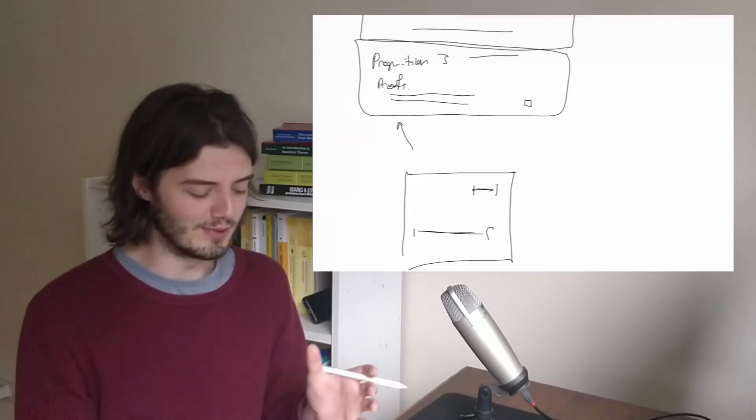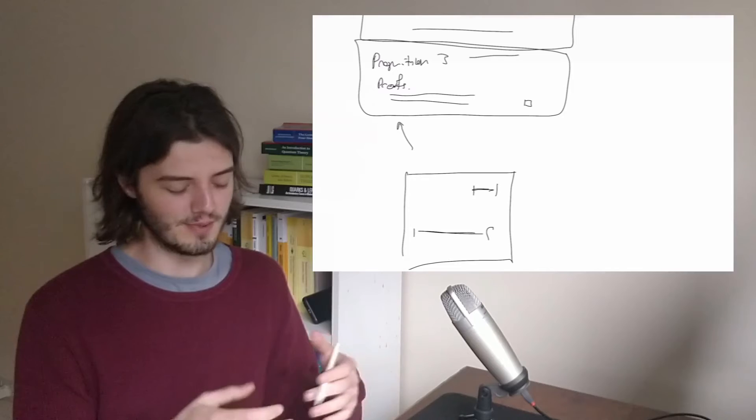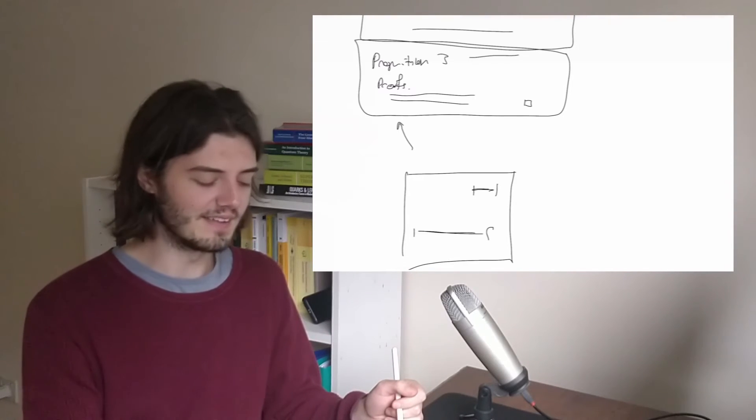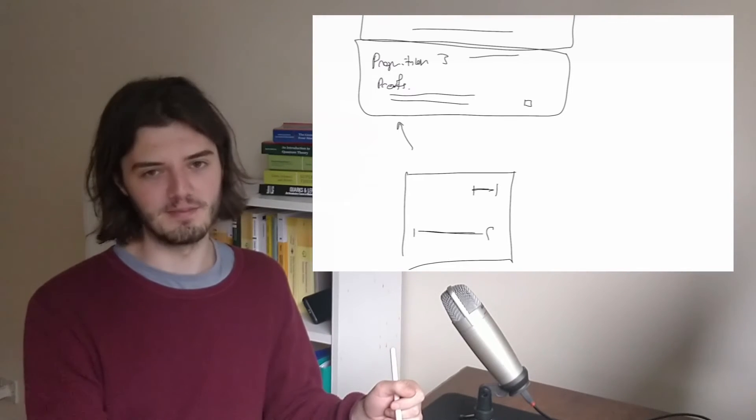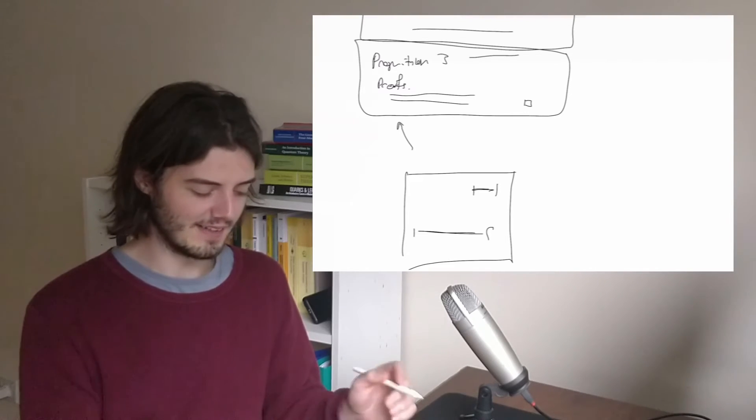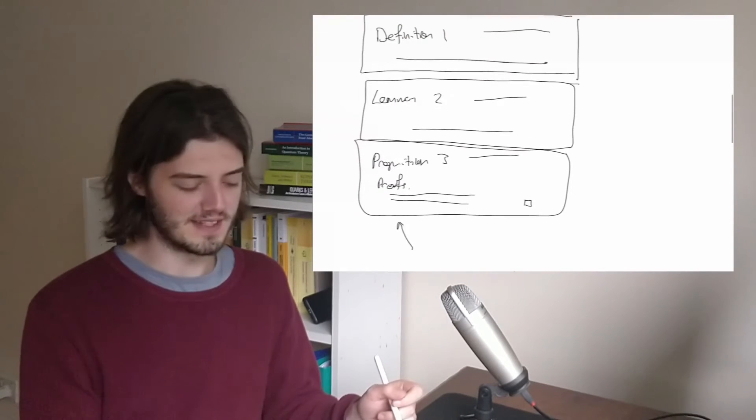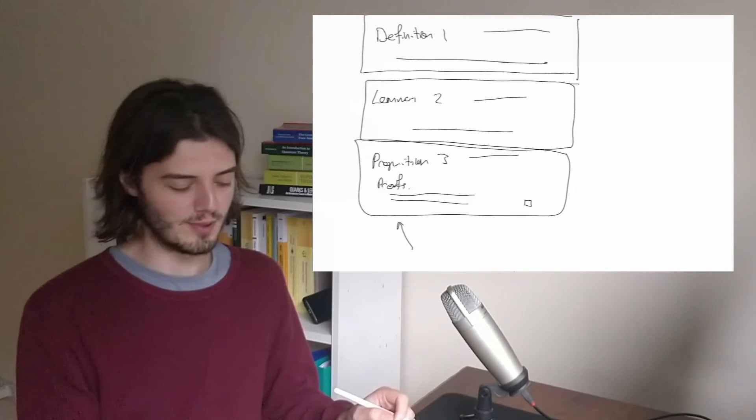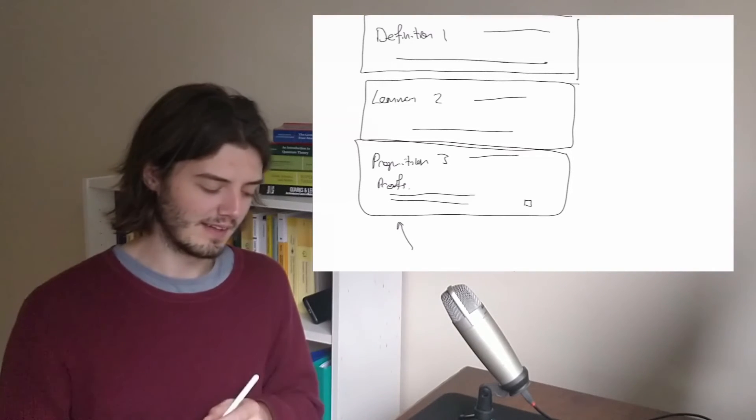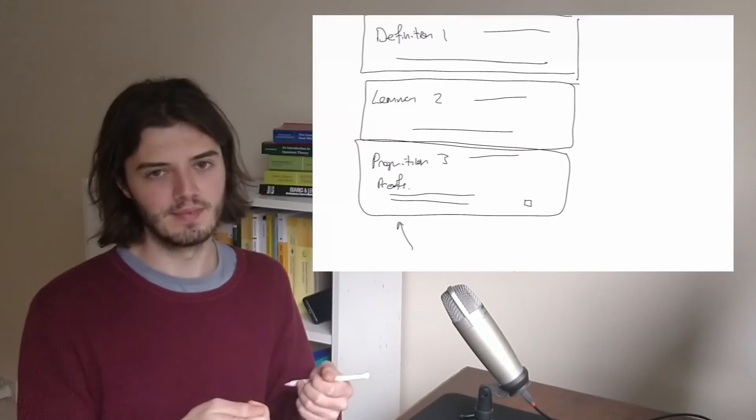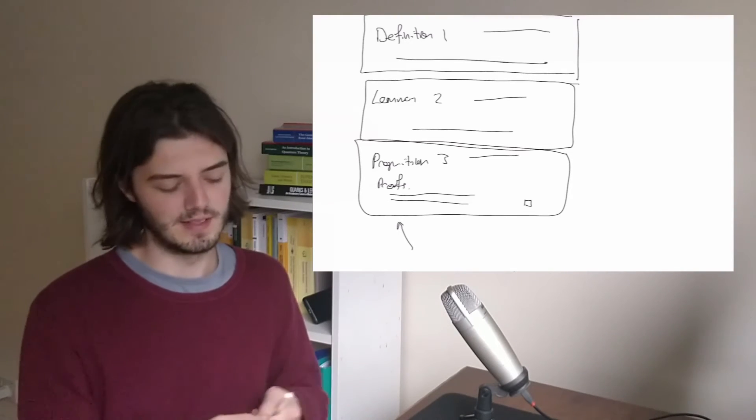Very frequently with papers this happens, where there'll be some symbol or something that's defined somewhere earlier on in the paper, and maybe it takes a good five minutes or so just to find where this symbol is defined. The idea of the Zettelkasten is really to stop this problem and have everything either defined in the note, or there's a very clear link to where the information is defined.